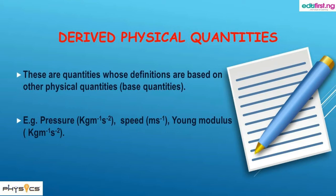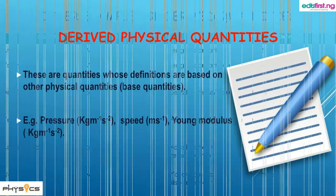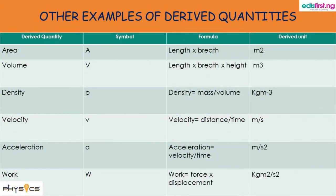These are examples of derived physical quantities: we have pressure, speed, Young's modulus, and so on. We also have other examples of derived quantities labeled in the table, showing symbols, formulas, and derived units. For example, area is derived as length multiplied by breadth, unlike time, which is fundamental and not derived.